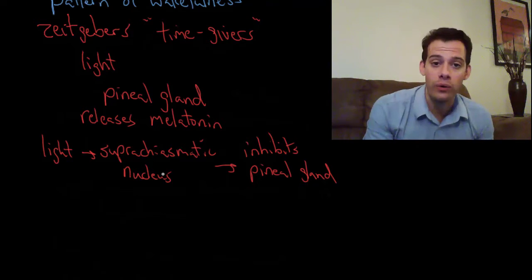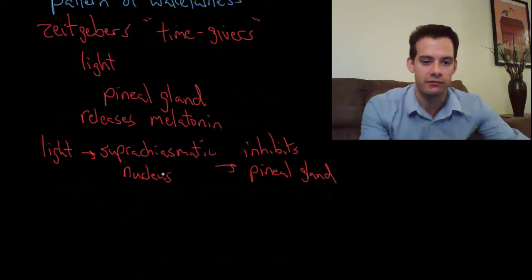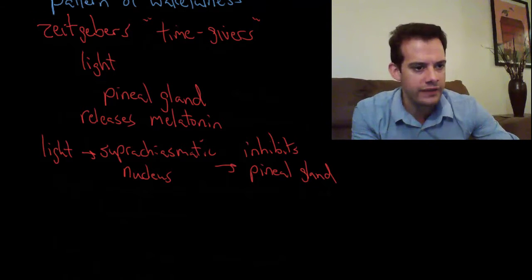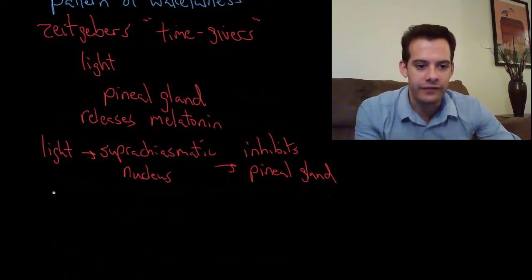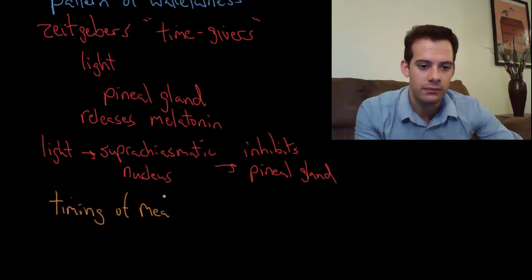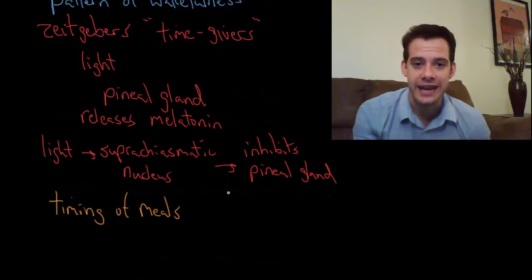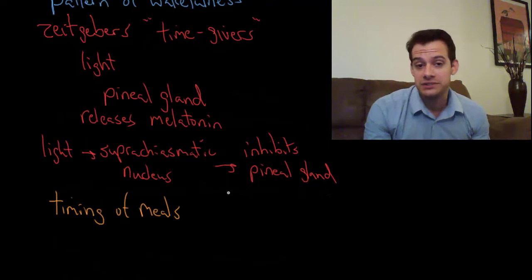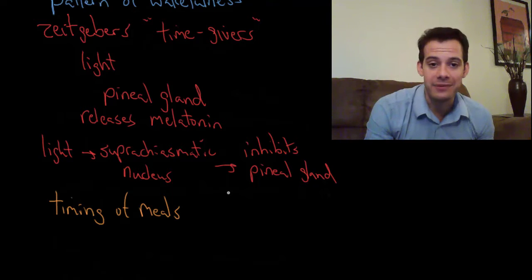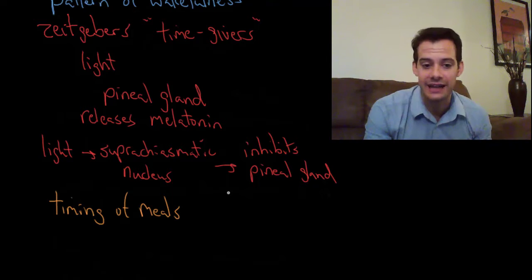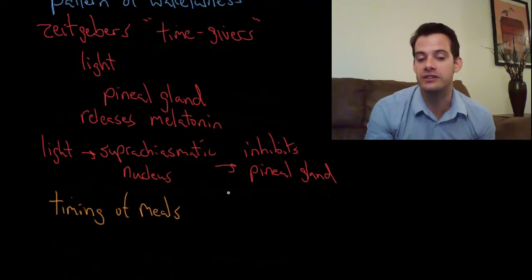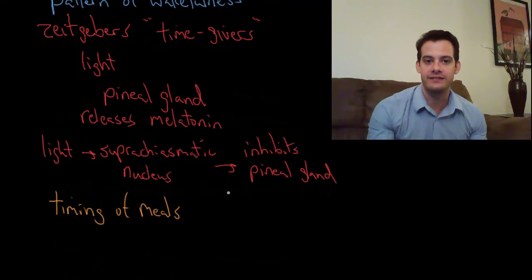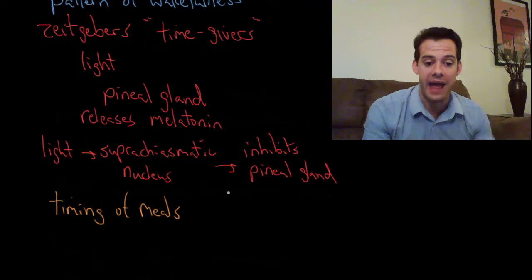Okay but light is not the only zeitgeber that we have. There's other things that influence our circadian rhythm. So what are these other things? Well one of them is timing of meals. So this plays a role in sort of setting how drowsy we feel or how awake we feel. And so generally it's a good idea to have your meals timed to happen at about the same time every day. Because this helps you to set this consistent clock. In the same way that it's ideal to wake up and go to sleep around the same time every day. This helps you get this circadian rhythm into a regular pattern.